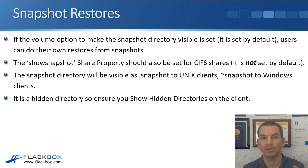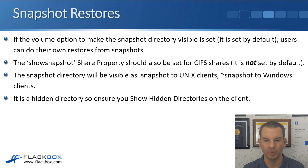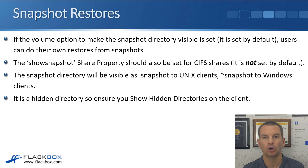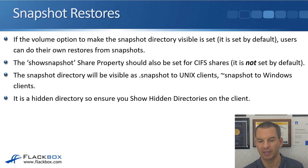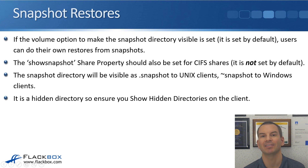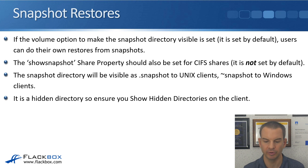When the snapshot directory is visible, it will show up as a directory inside the volume. To Unix clients, it will show as a directory named .snapshot. To Windows clients, it will show up as tilde snapshot — here is what a tilde looks like. The snapshot directory is a hidden directory, so you need to ensure that you show hidden directories on the client for them to be able to see it.